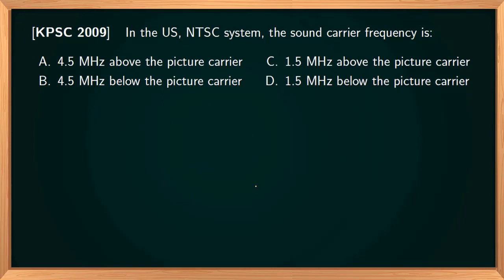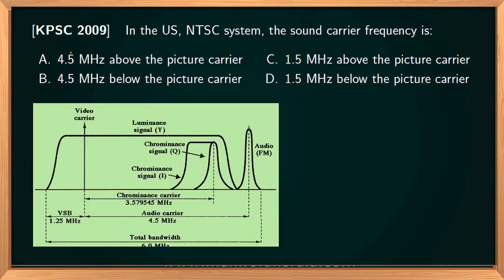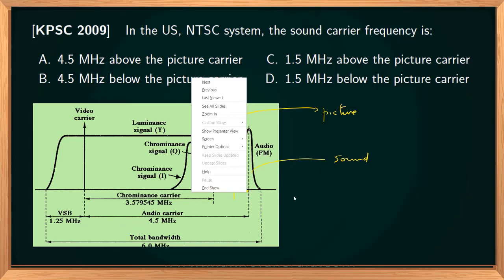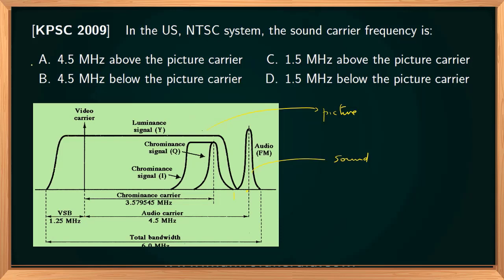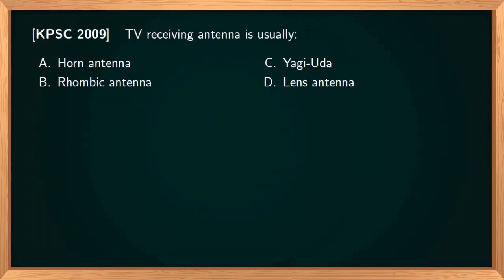This is a Kerala PSC question from 2009. In the US NTSC system, the sound carrier frequency is 4.5 MHz above the picture carrier frequency. Looking at the NTSC signal spectrum, the picture information is AM modulated and the sound signal part has a carrier frequency 4.5 MHz above the picture carrier frequency. The correct option is A.